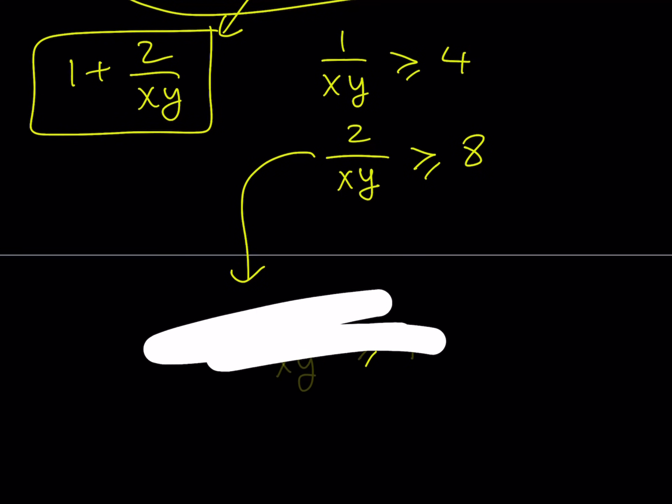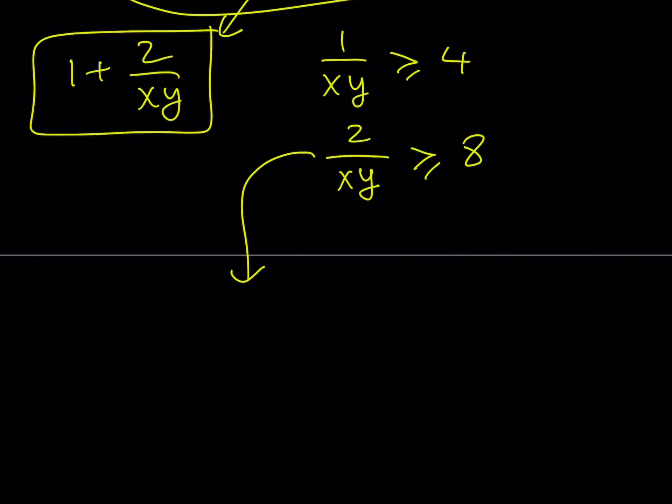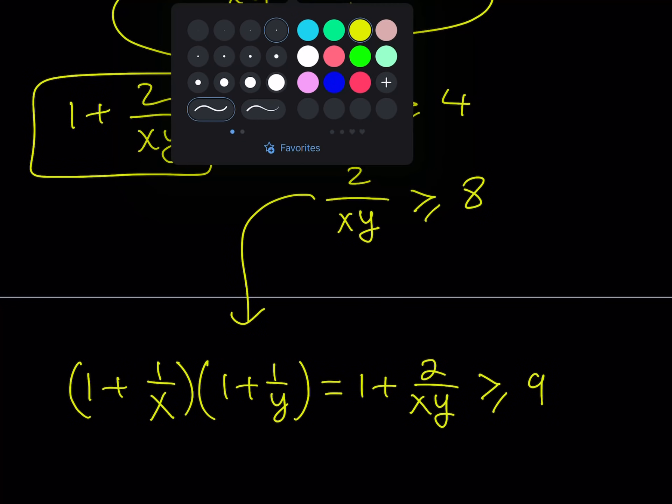By the way, let me just tell you that this is not just like an implication. We're not just trying to go backwards, but notice that 1 plus 2 over xy, so I should probably write it this way. My original expression was 1 plus 1 over x times 1 plus 1 over y. And we found that this is equal to 1 plus 2 over xy. And we just found out that this is greater than or equal to 9, which implies that my original expression is greater than or equal to 9.